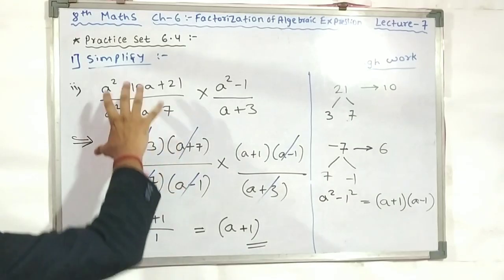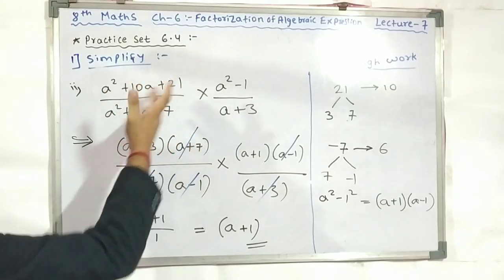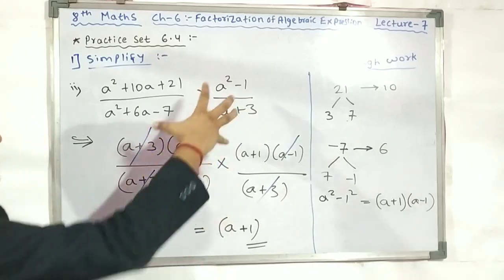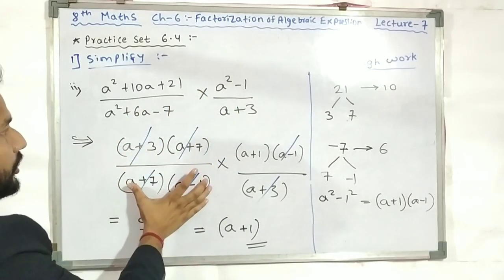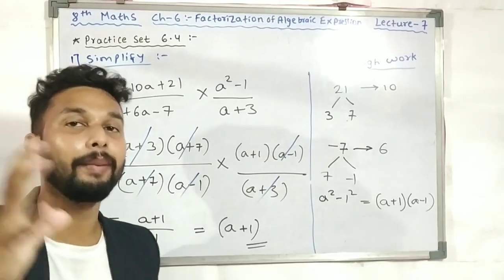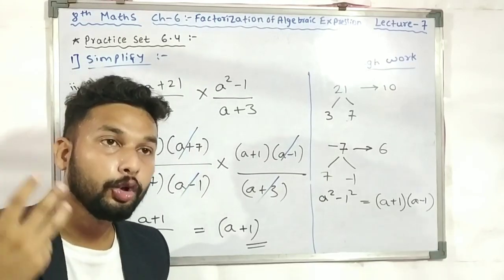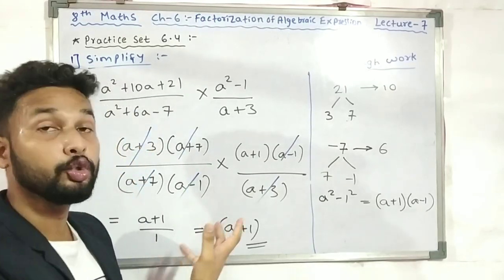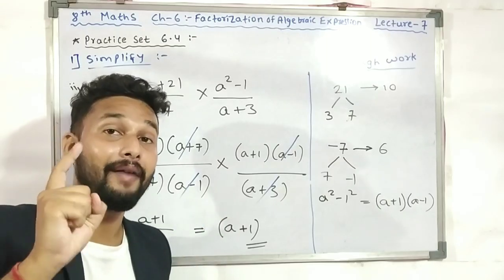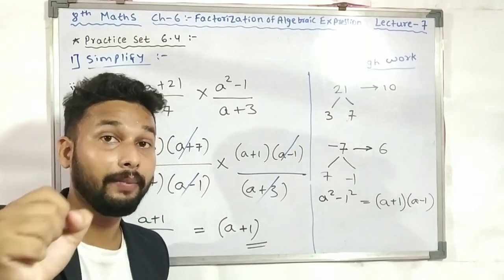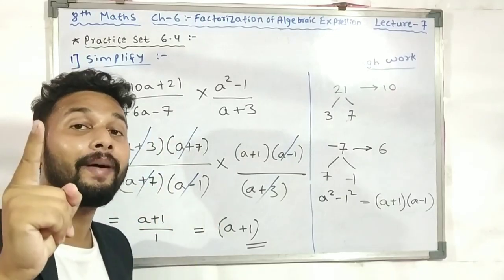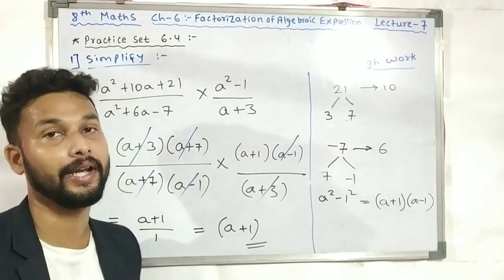So the final answer is (a+1). The question was: a²+10a+21 upon a²+6a-7, multiplied by a²-1 upon (a+3). We have taken our answer in two steps, which came to (a+1). You can see this is a simple type of example — just some people are scared and are not able to solve it. An average child, I guarantee, if they read this, will also be top in the math paper.